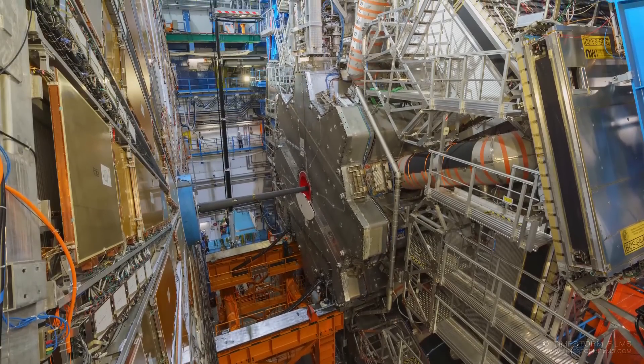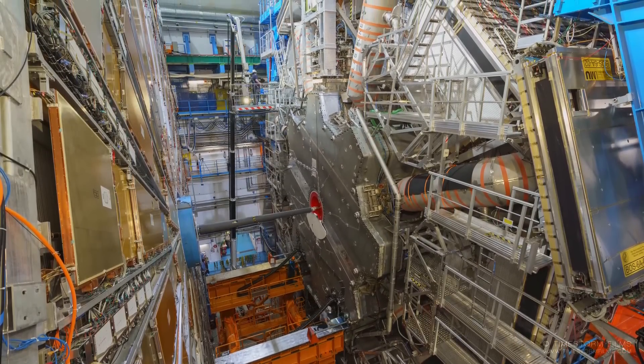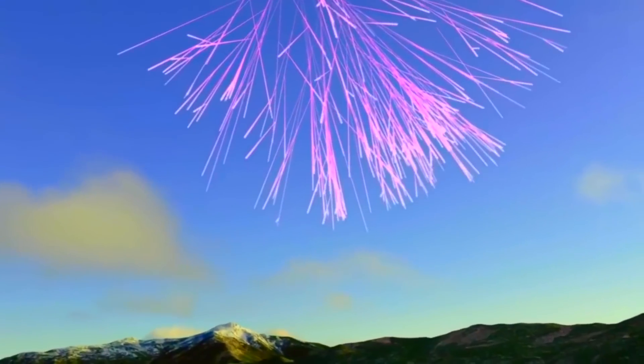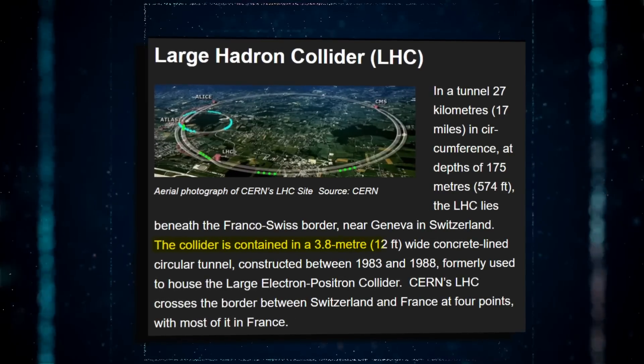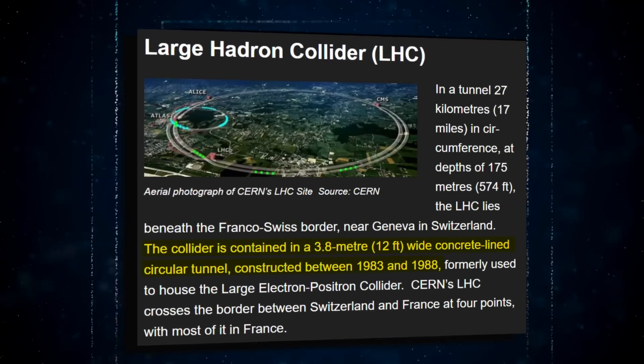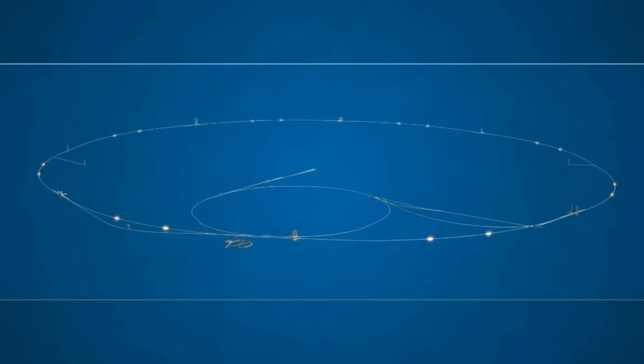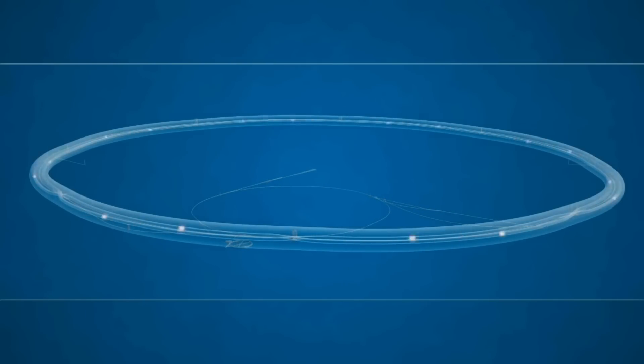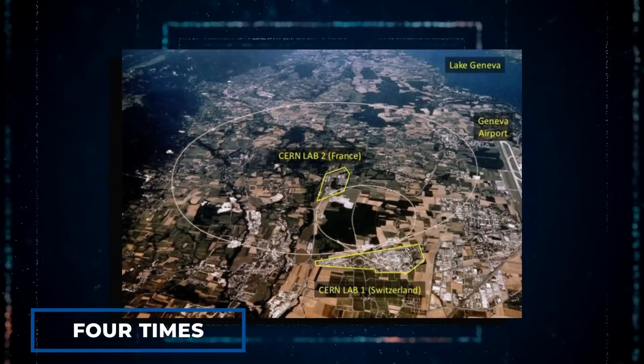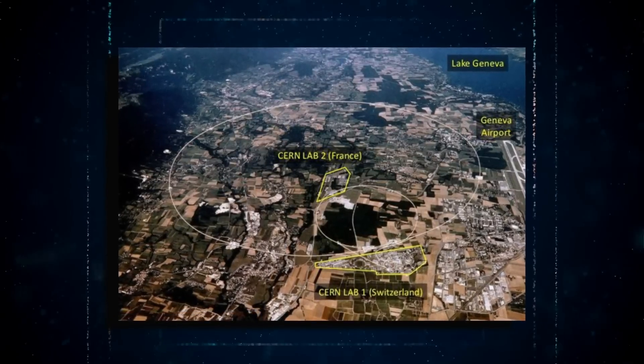This depth variation was intended to limit the amount of tunnel that sits beneath the Jura Mountains in order to prevent the requirements for excavation of a vertical access shaft there. This tunnel was chosen so that CERN would not have to spend large sums of money on expensive surrounding land. The 3.8-meter-wide concrete-lined tunnel was built between 1983 and 1988.